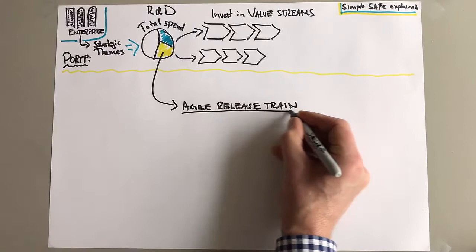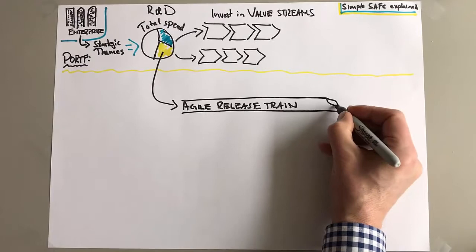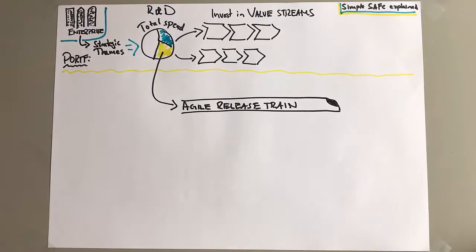So hundreds of people who are needed to develop new stuff for this value stream. That spend goes to fund an Agile Release Train. The Agile Release Train, we could also call it the program. We are now on the program level - we've left the portfolio level, we're down on the program level.